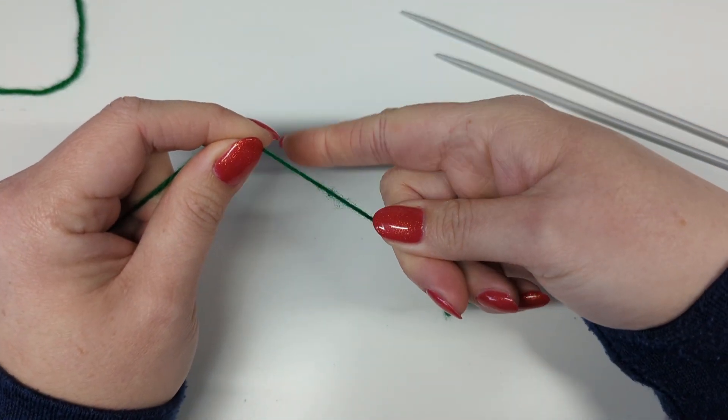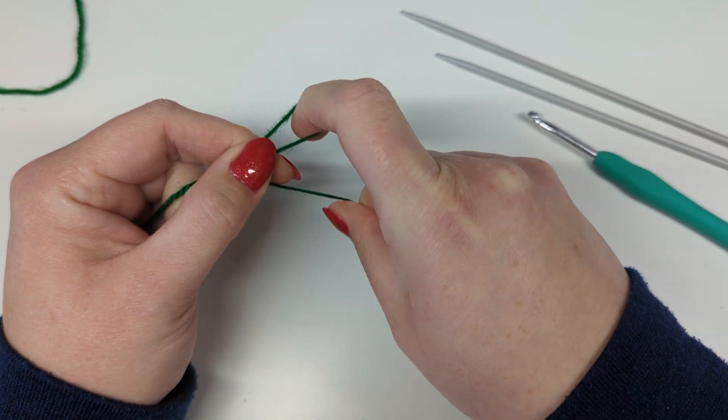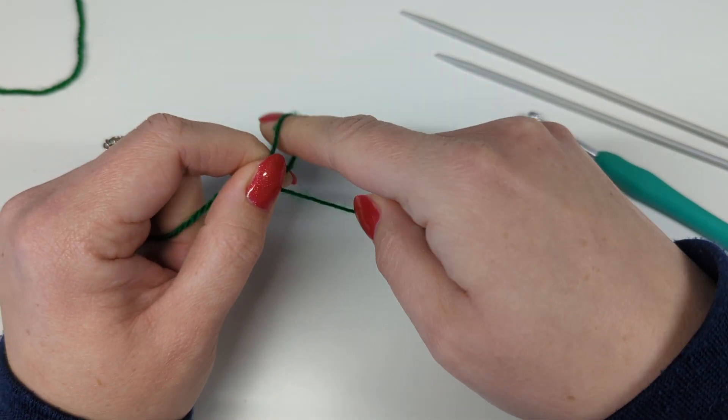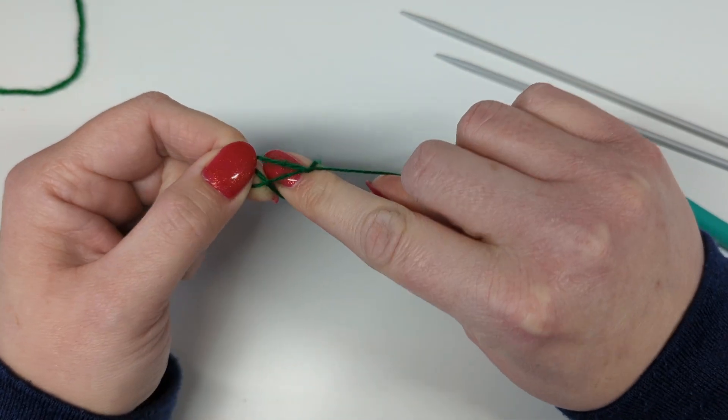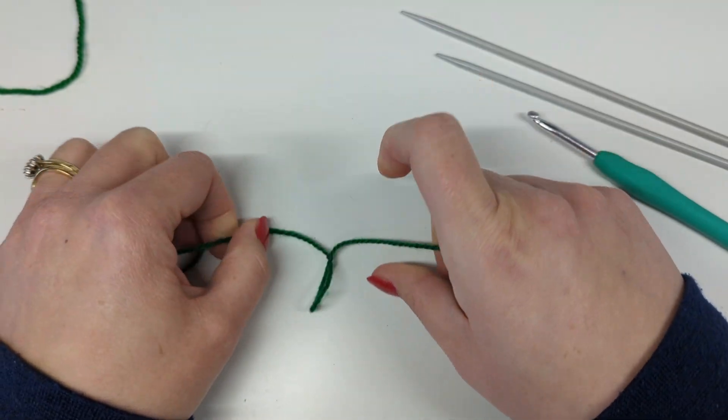So again with your finger underneath flip it around and grab and then take this put it over the top and then just hook, do it again, and then just hook that with your finger and pull it through. There we go.